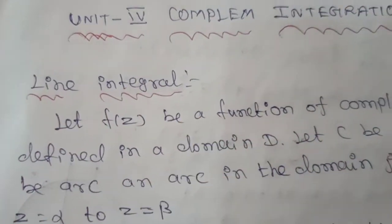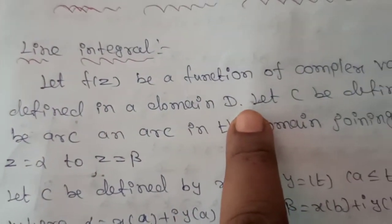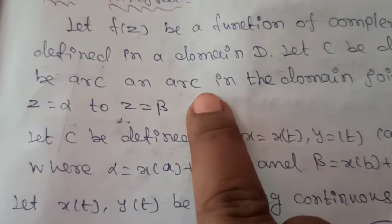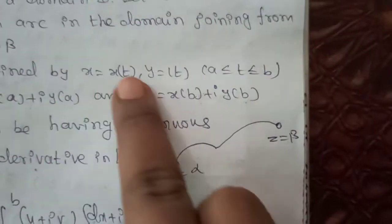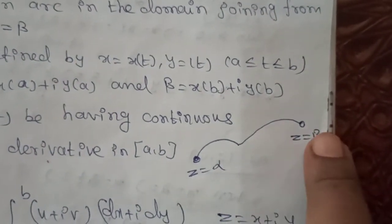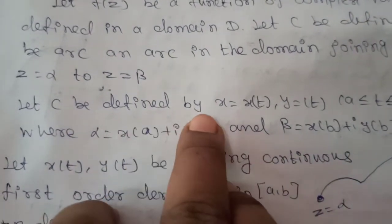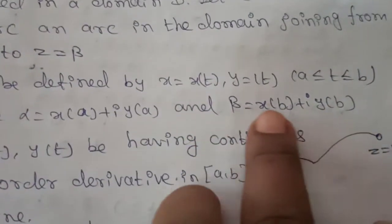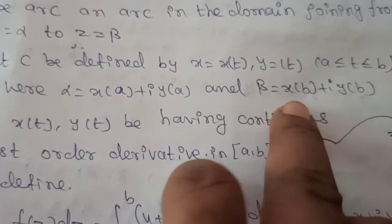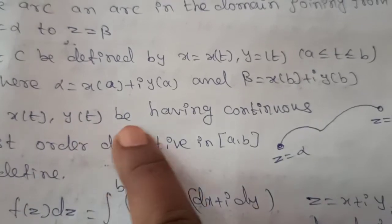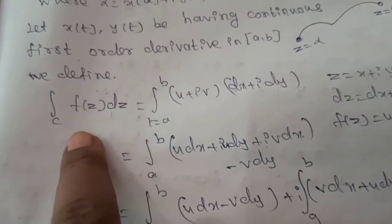First we have to see the line integral. What do you mean by line integral? Let f of z be a function of complex variable defined in a domain D. Let C be an arc in the domain joining from z equal to alpha to z equal to beta. Let C be defined by the curve x equal to x of t, y equal to y of t, where t varies from a to b.